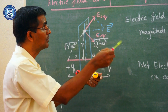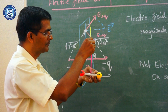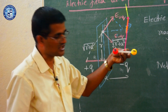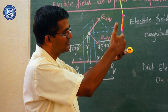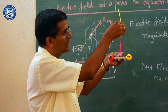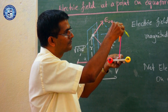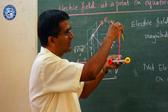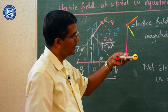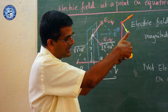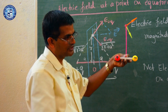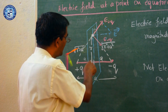Now, what is the electric field on the equatorial plane? This is the line passing perpendicular to the axis, and the test charge will experience a force. For example, I have a line passing through the center of the dipole and perpendicular to its axis. If I place a positive charge there, it will experience a repulsive force from the positive charge and an attractive force from the negative charge, such that two forces act on the test charge as shown in the diagram.